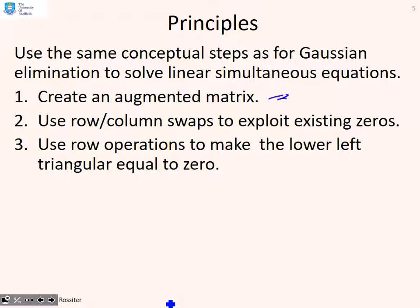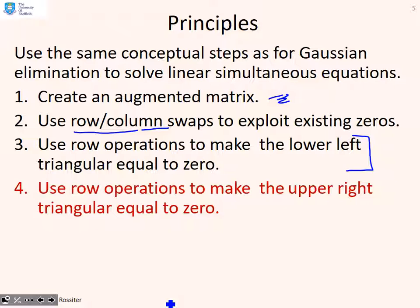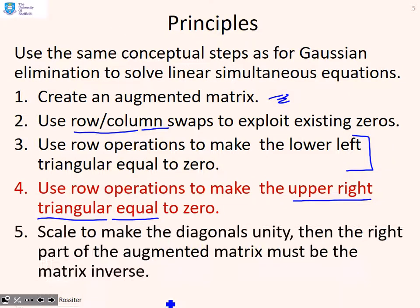What we're going to do next is use the same conceptual steps as for Gaussian elimination to solve linear simultaneous equations. First, we create the augmented matrix; then we use row and column swaps to exploit existing zeros; then we use row operations to make the lower-left triangle equal to zero — row echelon form. Now there are additional steps: we also use row operations to make the upper-right triangle equal to zero, and then we scale the diagonals to make them unity. The right part of the augmented matrix then becomes the matrix inverse.